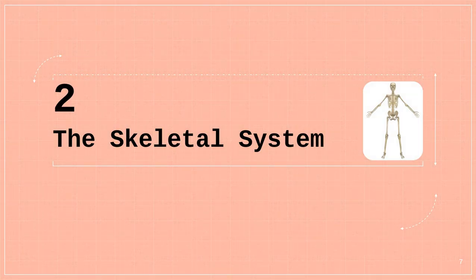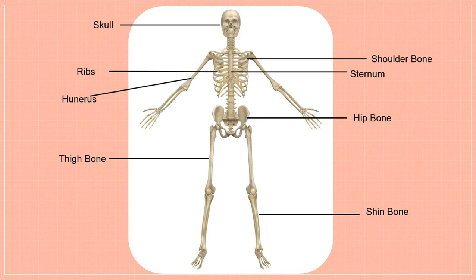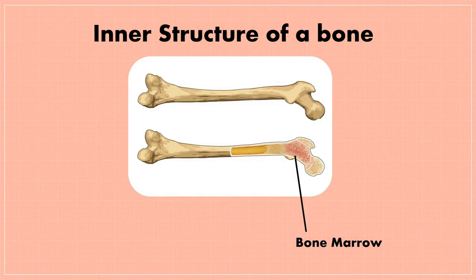All the bones in our body form a framework called the skeleton. Without the skeleton, our body will collapse. The skeleton gives the body its shape and strength and also protects the soft organs inside our body. Bones are hard and are of different shapes and sizes. The skeleton of an adult human is made up of 206 bones. Bones are hard and tough on the outside but soft and spongy on the inside. The inside of a bone contains a jelly-like substance called bone marrow, where blood cells are produced.